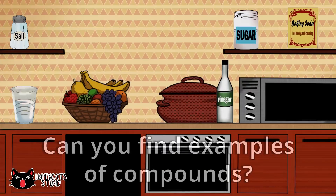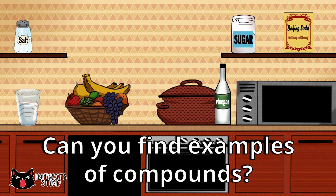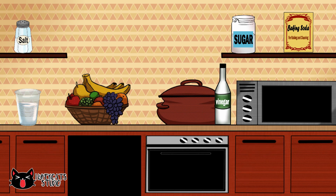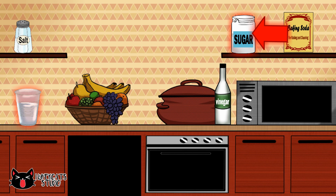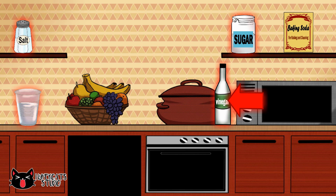We can find compounds at home. Look at this kitchen — can you find examples of compounds? We can find five compounds here: the first one is water, the second compound is sugar, the third is salt, the fourth is vinegar, and lastly, baking soda.